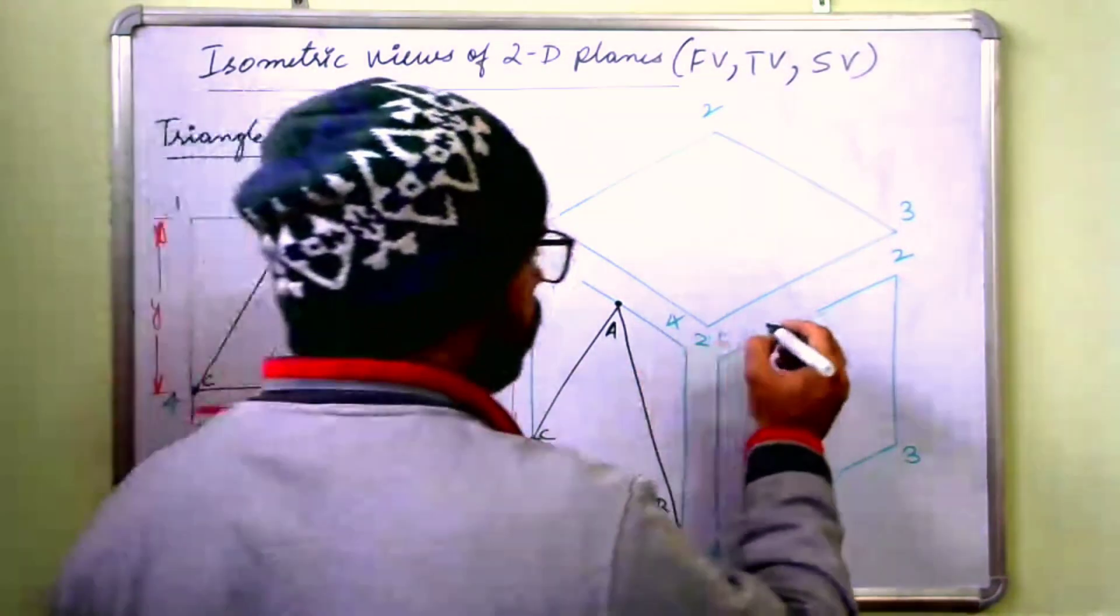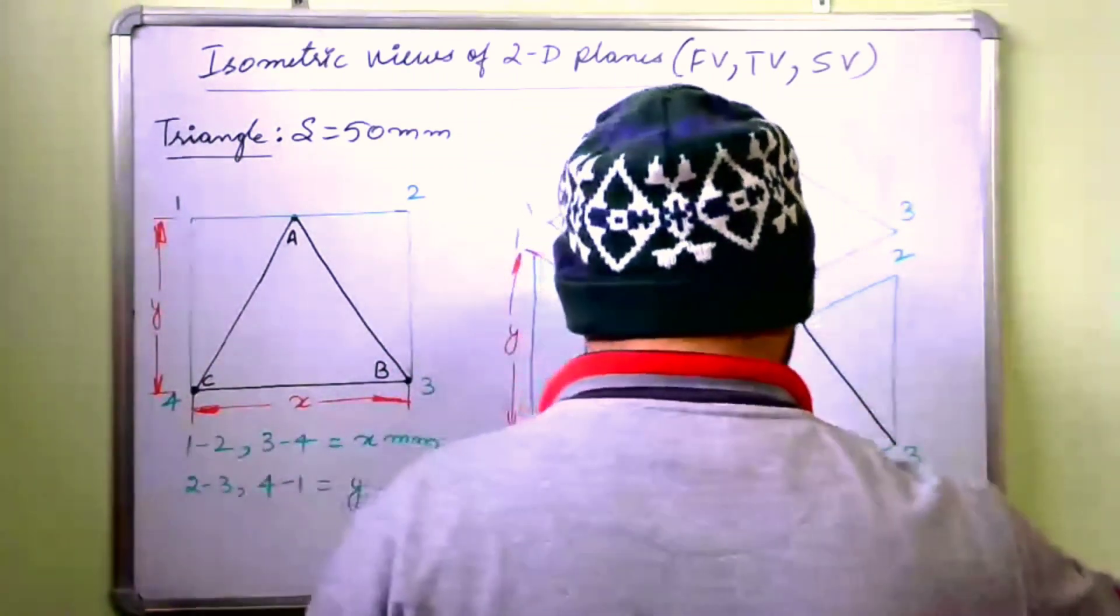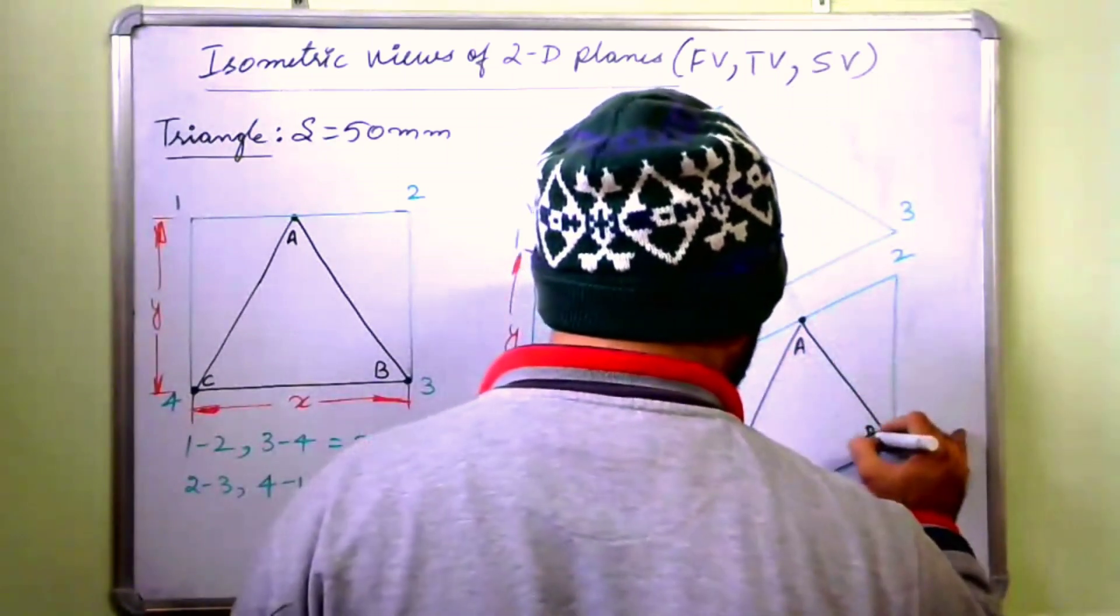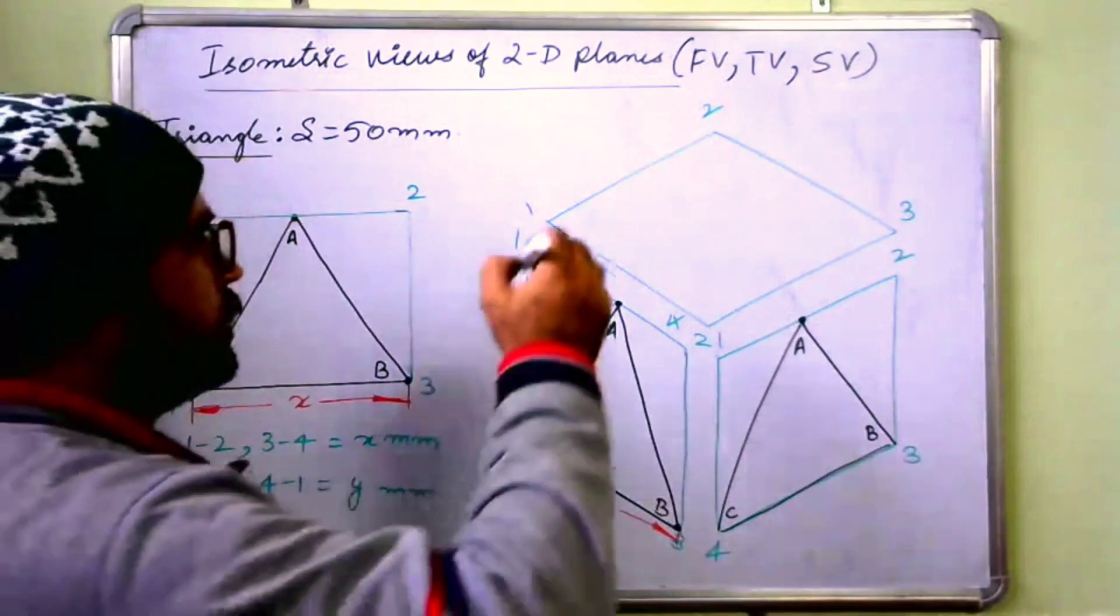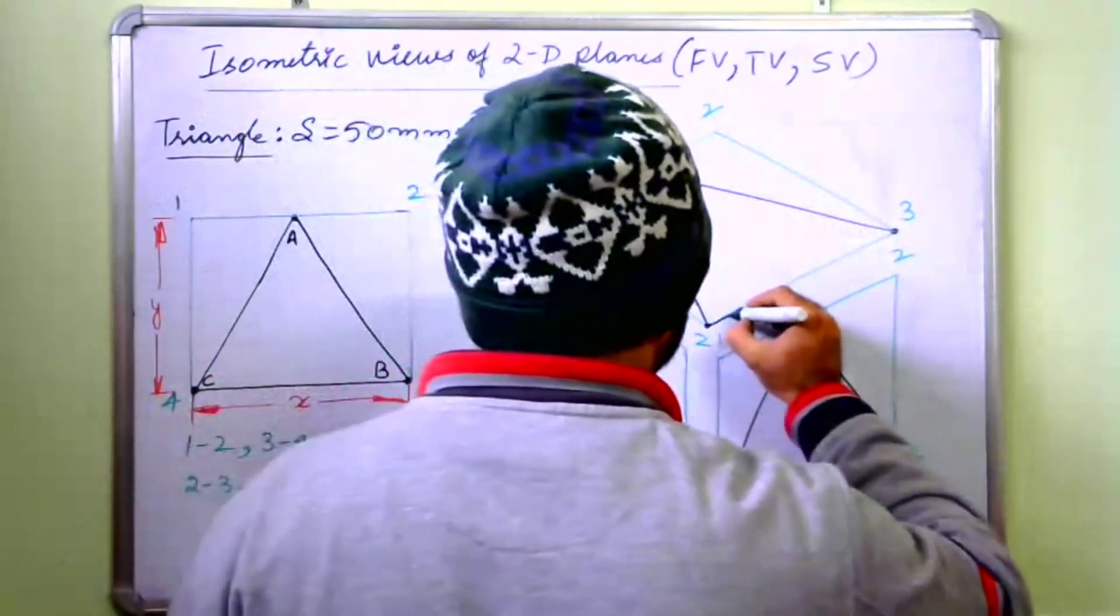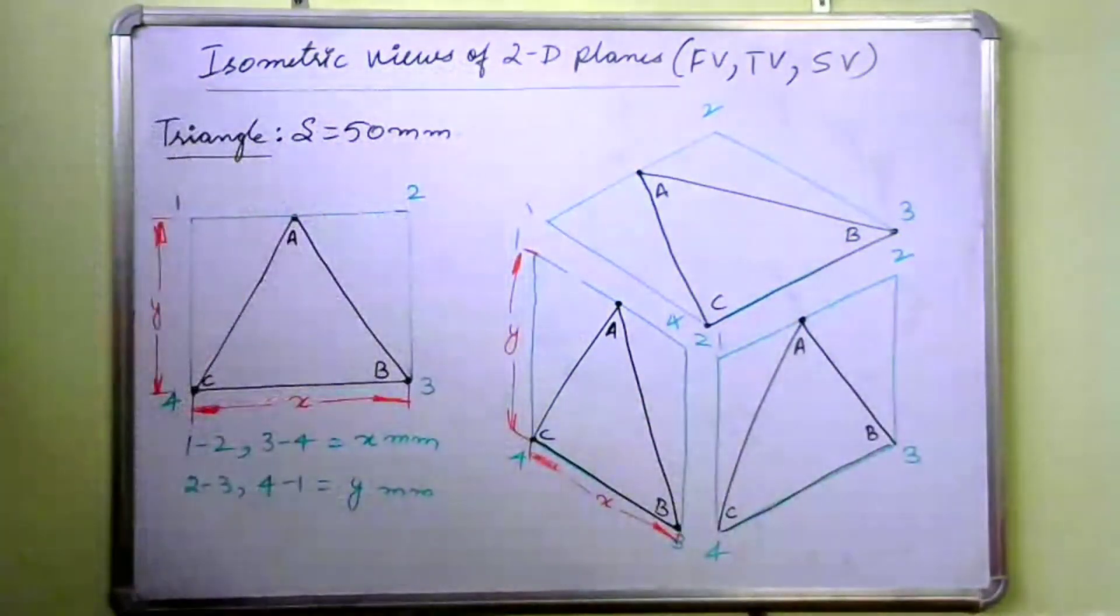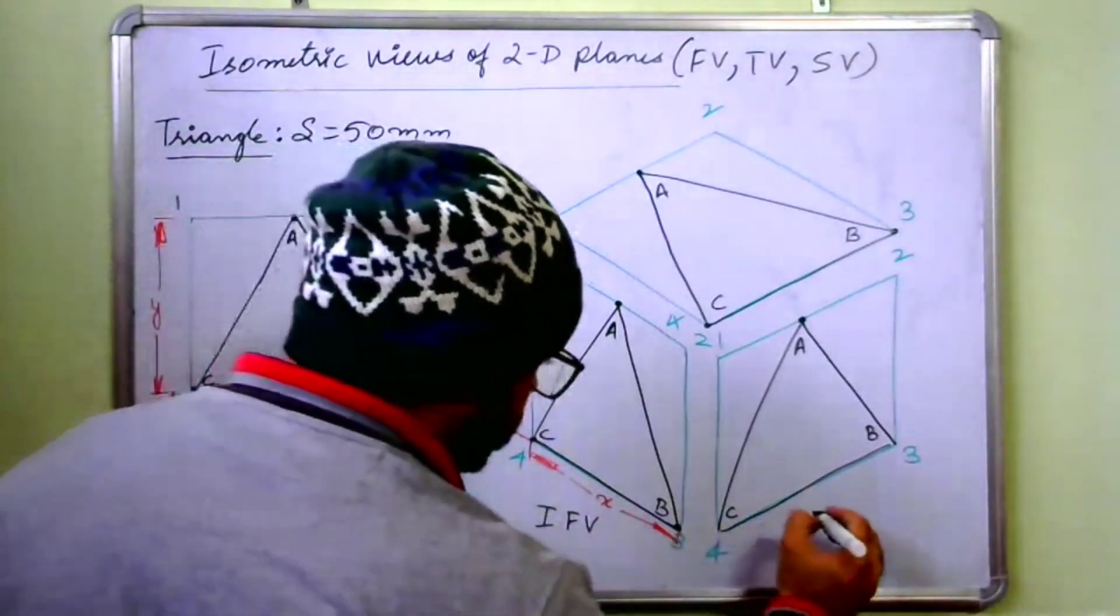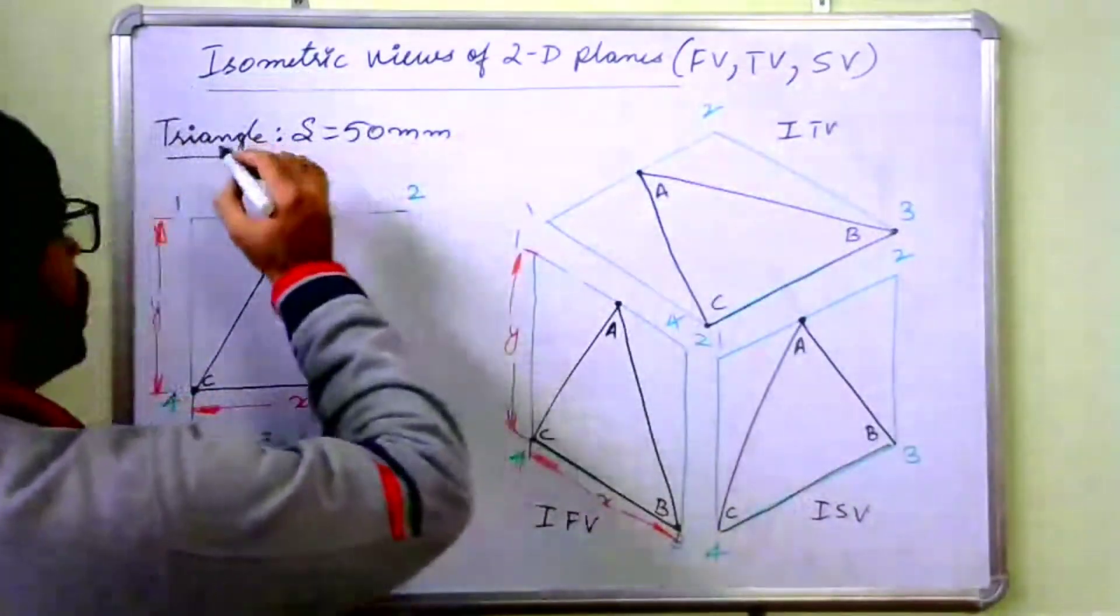Similarly, mark it over here. This is a, this is b and this is c. Similarly, here also in the top view also. A, b and c. So this is isometric front view. Let us say this is isometric side view. And this is isometric top view of a triangle.